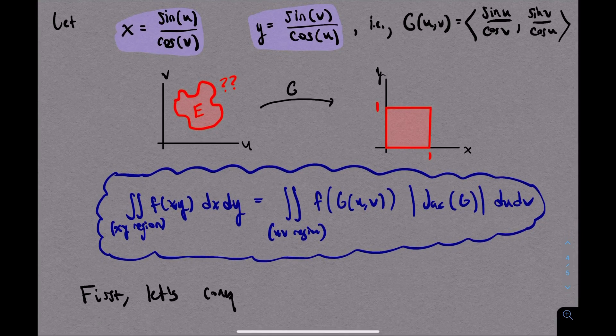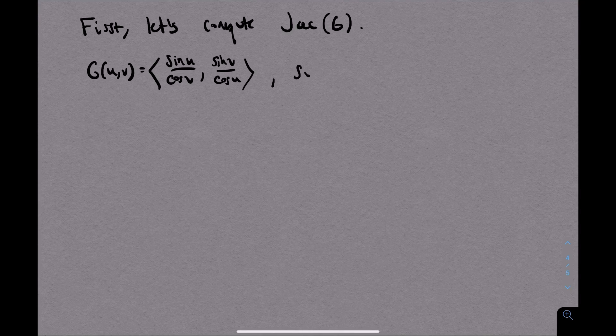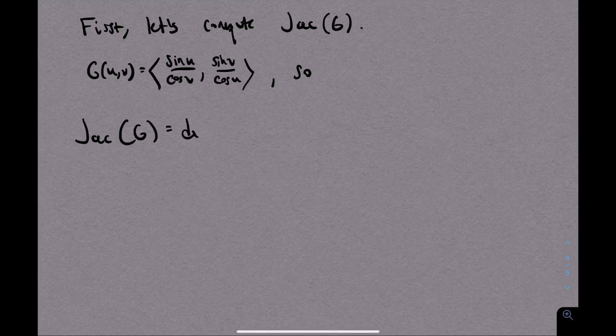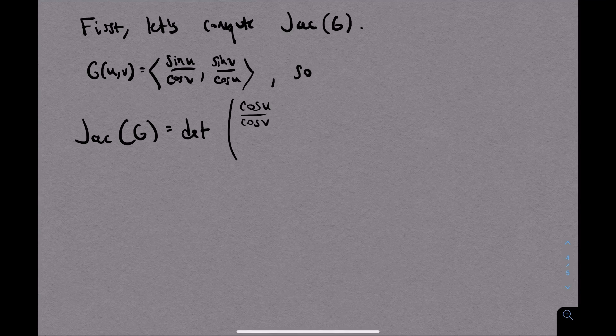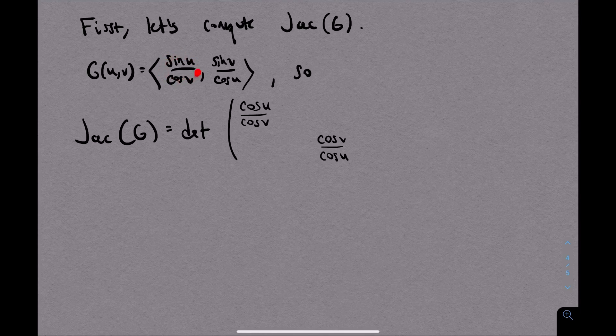So let's compute that first. The Jacobian is going to be the determinant of the 2 by 2 matrix of first partial derivatives. The derivative of x with respect to u is easy, and likewise the derivative of y with respect to v is easy.